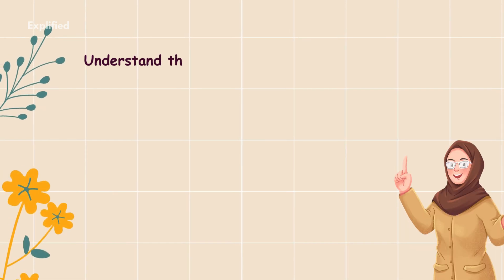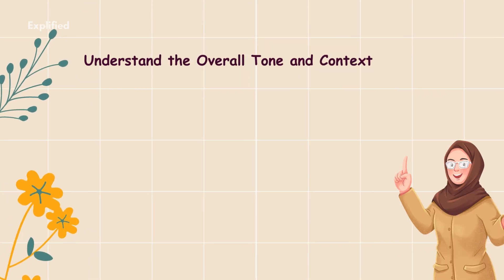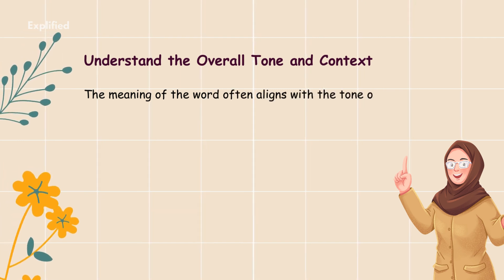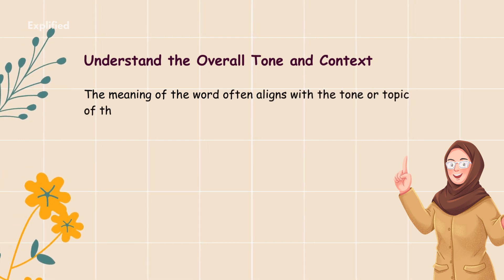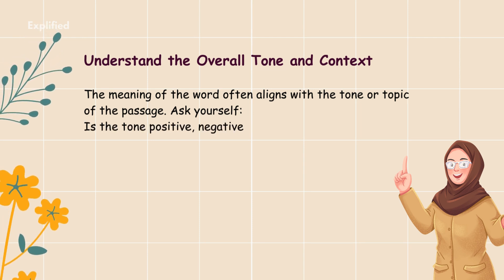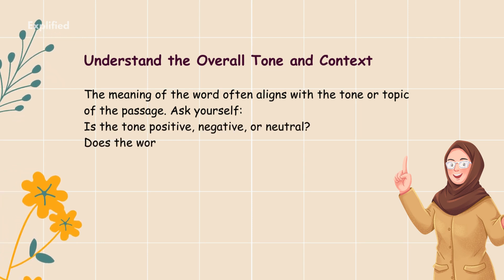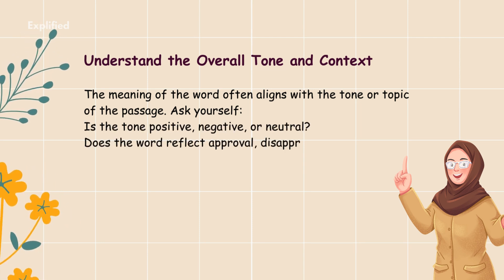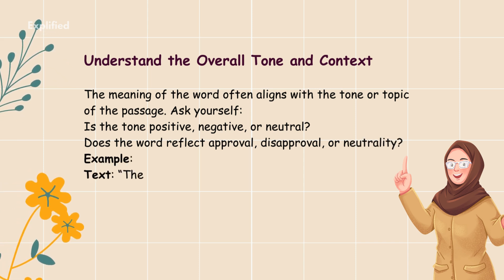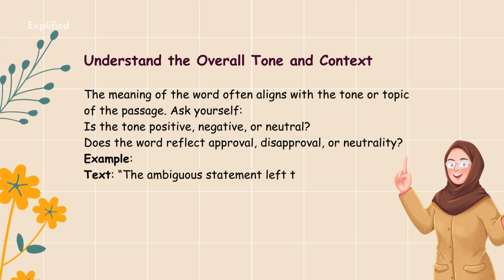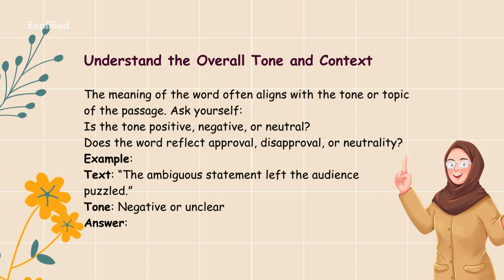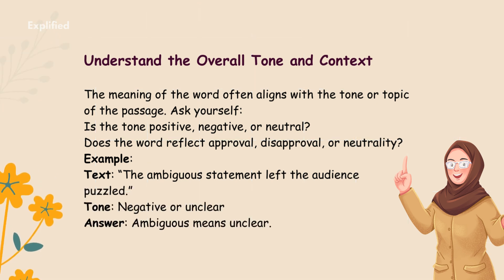Tip 2: Understand the overall tone and context. The meaning of a word often aligns with the tone or topic of the passage. Ask yourself: is the tone positive, negative, or neutral? Does the word reflect approval, disapproval, or neutrality? Example — text: 'The ambiguous statement left the audience puzzled.' Tone: negative or unclear. Answer: ambiguous means unclear.